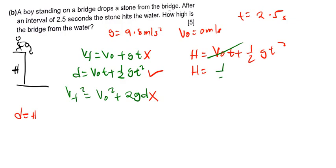And I will end up having here 9.8, then 2.5 squared. So H will be equal to, you have 2.5 squared times 9.8 times 1 over 2 is 0.5, 30.63.